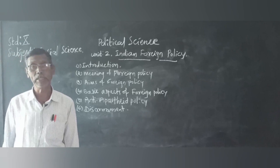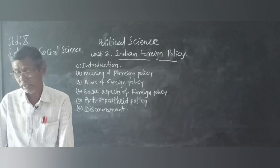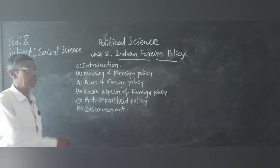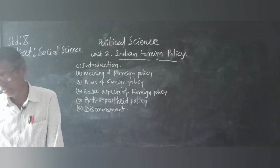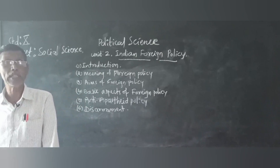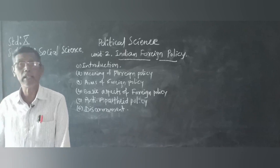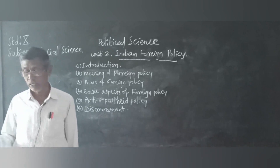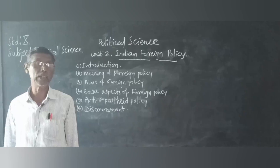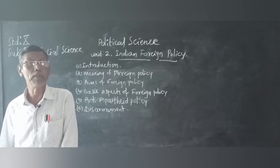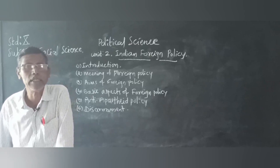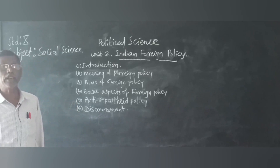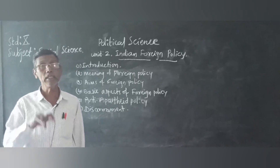India became free from the British in 1947. As an independent country, India wanted peaceful coexistence with other countries of the world. The aims of our foreign policy include maintaining national security. For maintaining national security, India has its own foreign policy and maintains good relationships with other countries and neighboring countries.